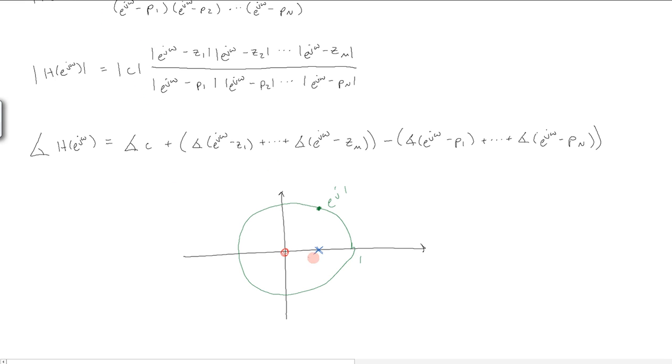Then, just like in the Laplace domain, we're going to draw vectors, because that's what this is defining: e to the j omega minus each zero minus each pole, that corresponds to a vector.